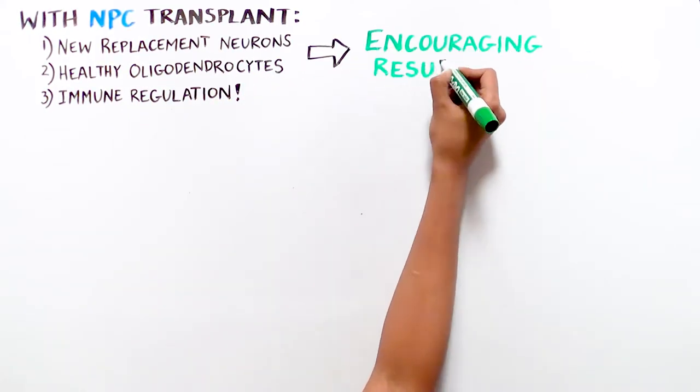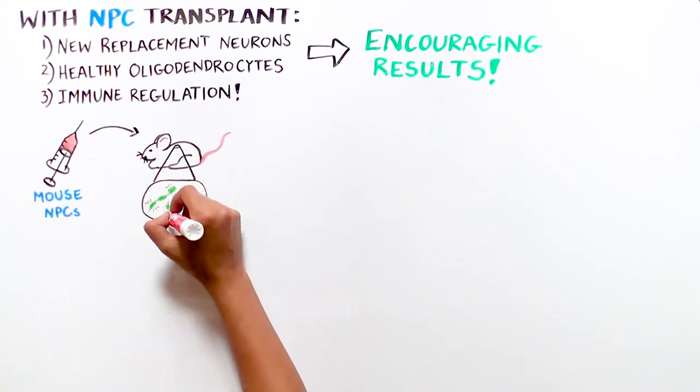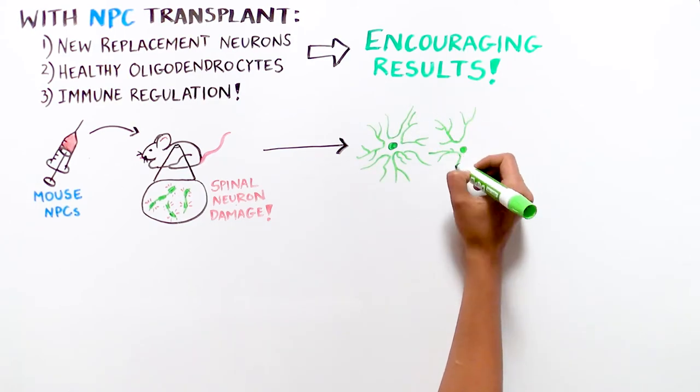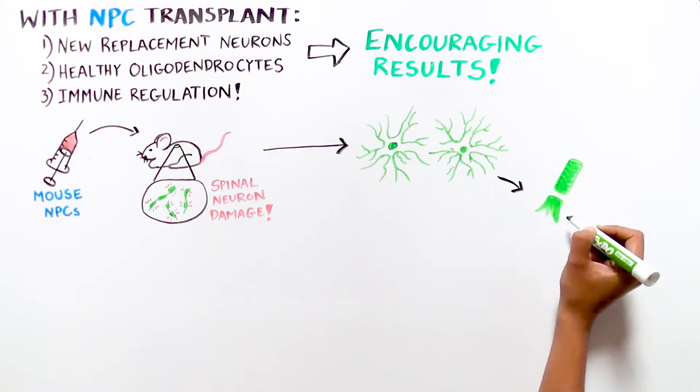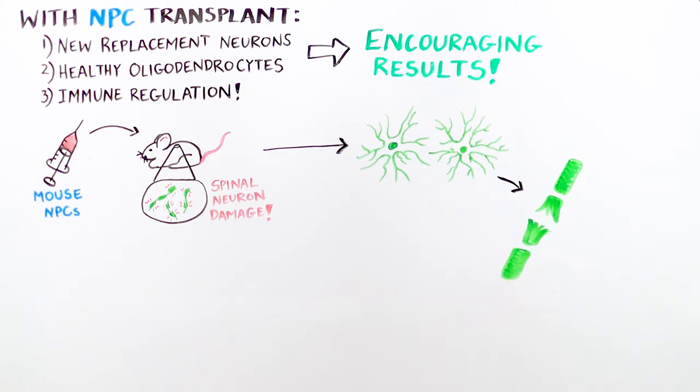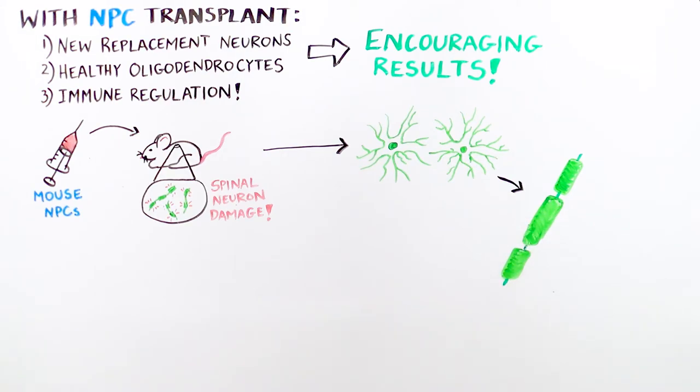Amazingly, this treatment works. Mouse NPCs transplanted into mice that had damaged neurons in their spinal cords could become oligodendrocytes, leading to increased production of myelin around the axons of neurons. And the researchers also found that damaged neurons were replaced with healthy ones.